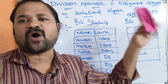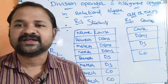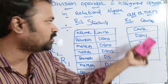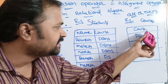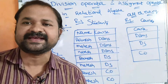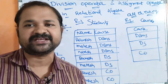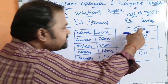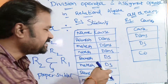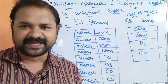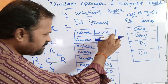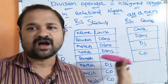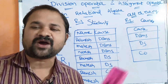Proper subset means every attribute of R2 must be present in R1, and R2 is not equal to R1. If we consider R2, it has only a single attribute with values DBMS, Data Structure, and Computer Organization. Every attribute of R2 is present in R1 — the attribute 'Course' is present in R1, and the values DBMS, DS, and CO are all present in R1. Therefore, we can apply the division operation on these two relations because R2 is a proper subset of R1.